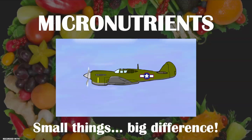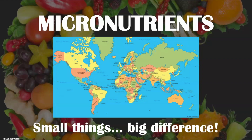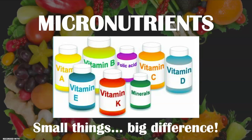In aviation there's a rule called the 60 to 1 rule. This means if you were leaving the United States of America, aiming for England, and you were off by just one degree, you might end up in Australia. So small things make big differences.